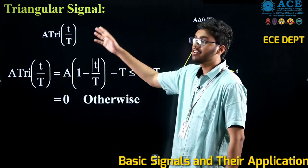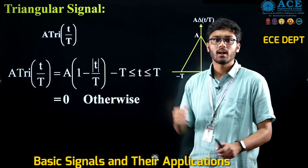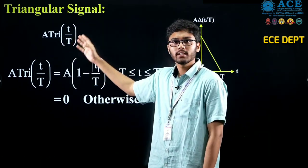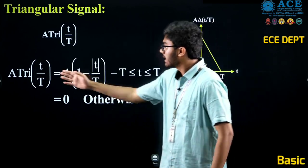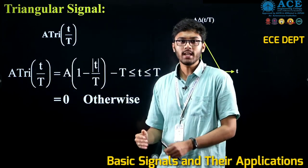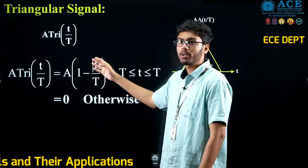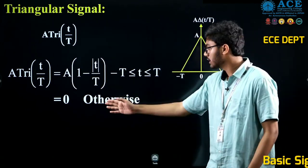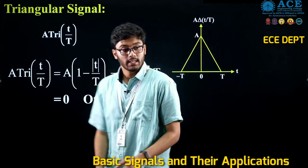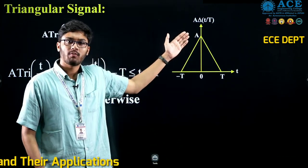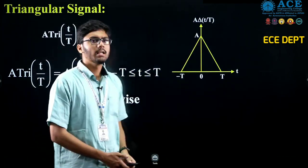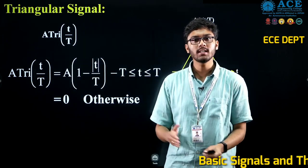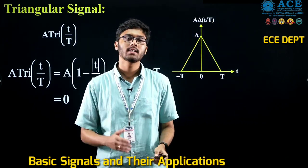Next, we have the triangular signal, represented by A·tri(t/T). It is defined as: A·tri(t/T) equals A times (1 minus |t|/T) for values of t between minus T and T, and 0 otherwise. This is the graphical representation of a triangular signal. Practically, this signal is used in musical instruments, as it has higher harmonics.